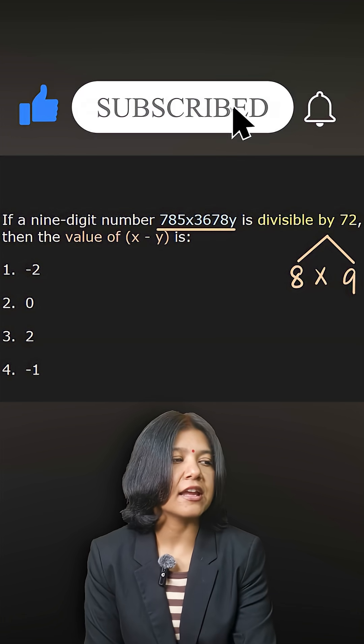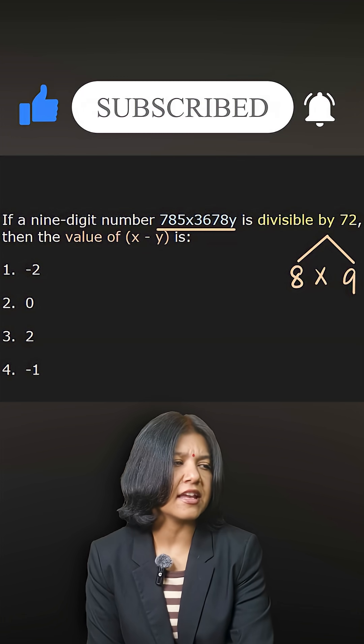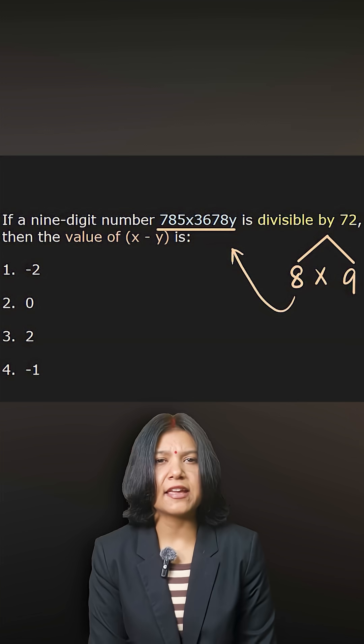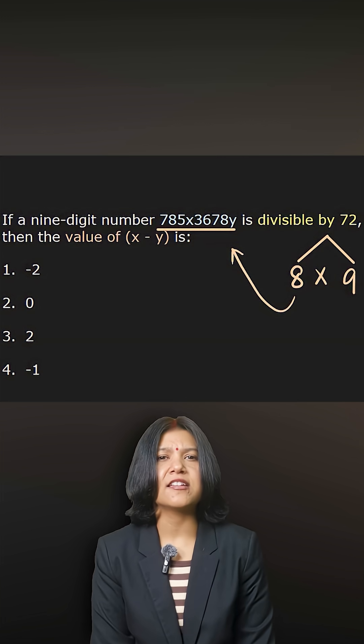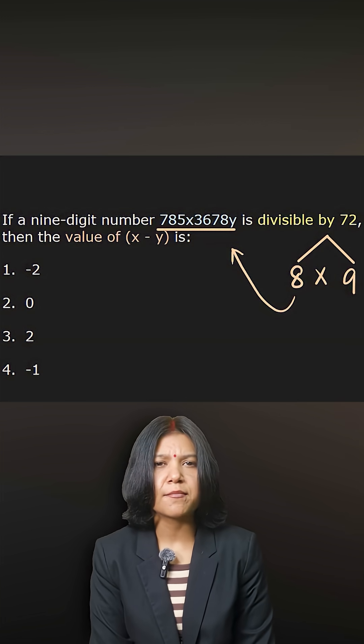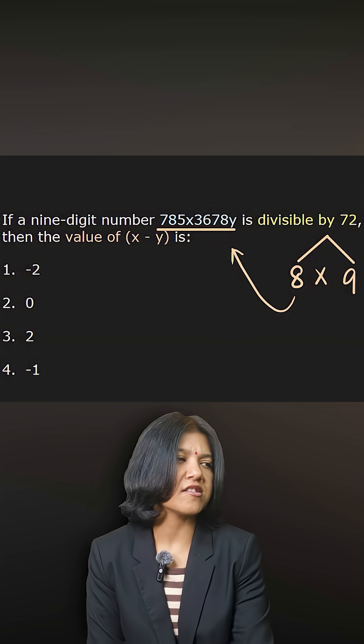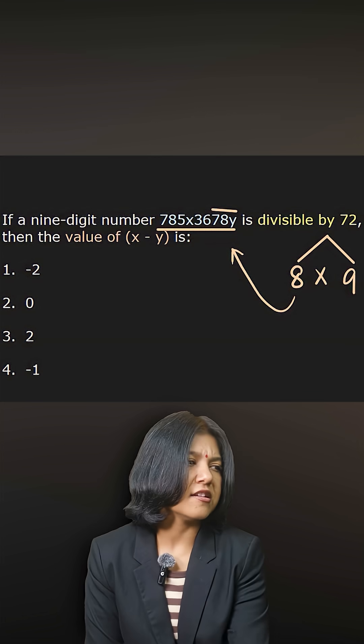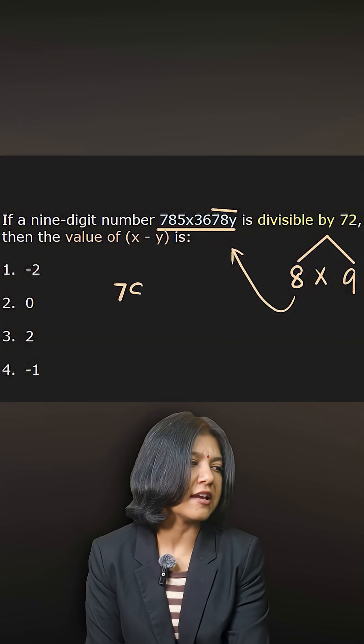We'll look at this number 8. When is a number divisible by 8? A number is always divisible by 8 when the last three digits make a number divisible by 8. So you just have to look at the last three digits: 7, 8, and y. This part has to be divisible by 8.